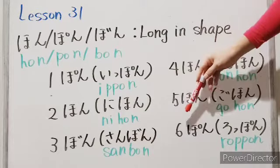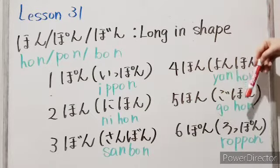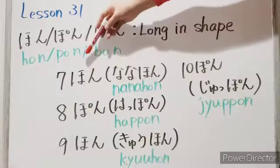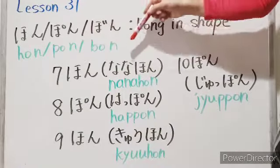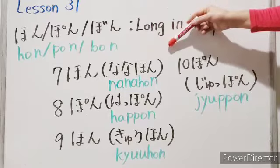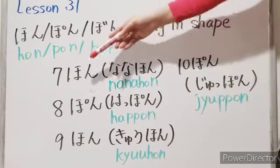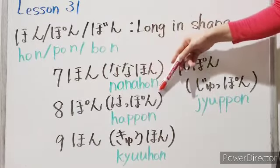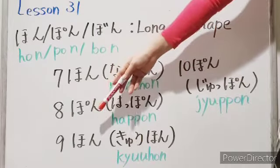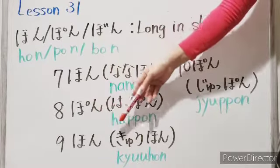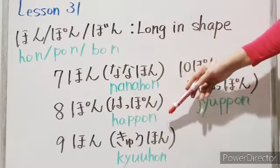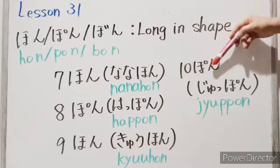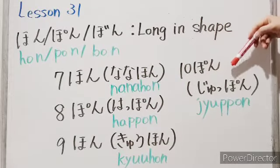Six — roppon. Seven — nanahon. Eight — happon. Nine — kyuuhon. Ten — juppon.